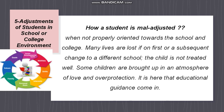Number five: adjustment of students in school or college environment. A student becomes maladjusted when not properly oriented towards school and college. Many problems arise if, on first or a subsequent change to a different school, the child is not treated well. Some children are brought up in an atmosphere of love and overprotection, and it is here that educational guidance comes in.